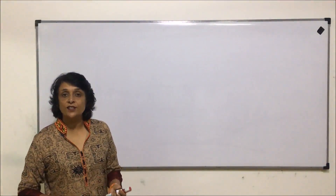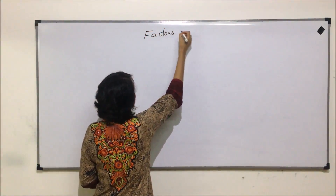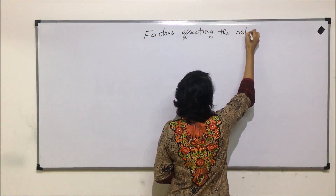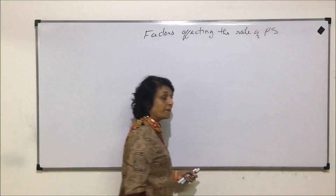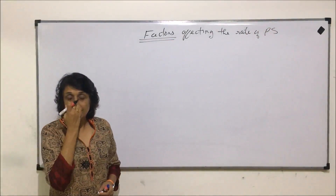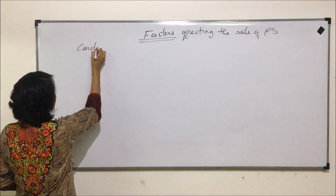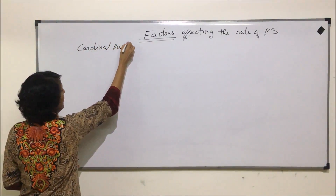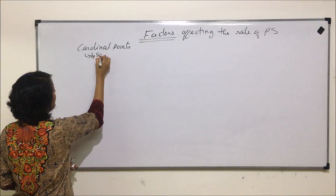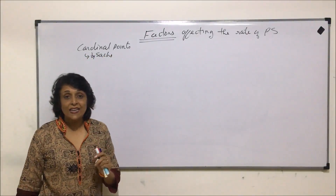Let us discuss the factors that affect the rate of photosynthesis. Before we take up all these factors, we need to understand two points. First, a term known as cardinal points. This concept was given by Sachs. According to this, every factor has three points.